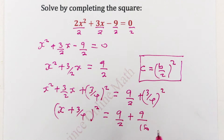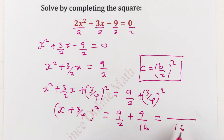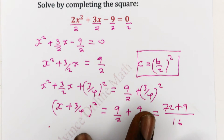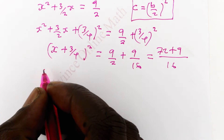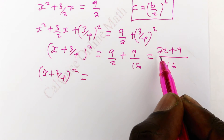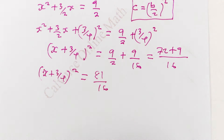We can combine the right side so that it is a single fraction. The LCM there is 16. So you have 2 into 16 — 8 times — and 8 times 9 is 72. So what we have now is x plus 3 over 4 squared equal to 72 plus 9, which is 81 over 16.